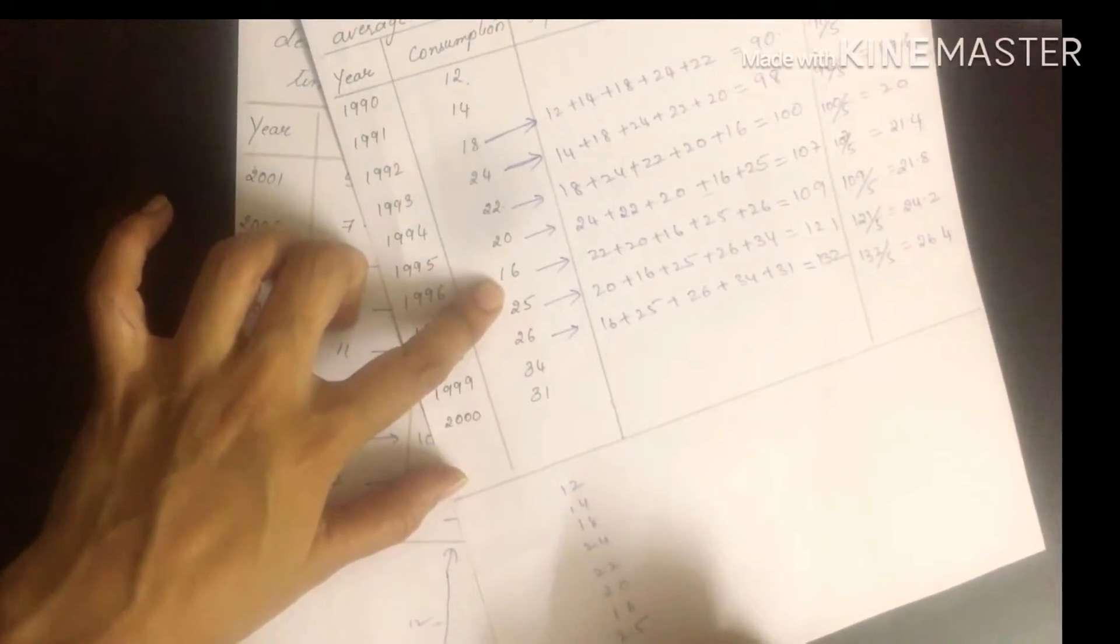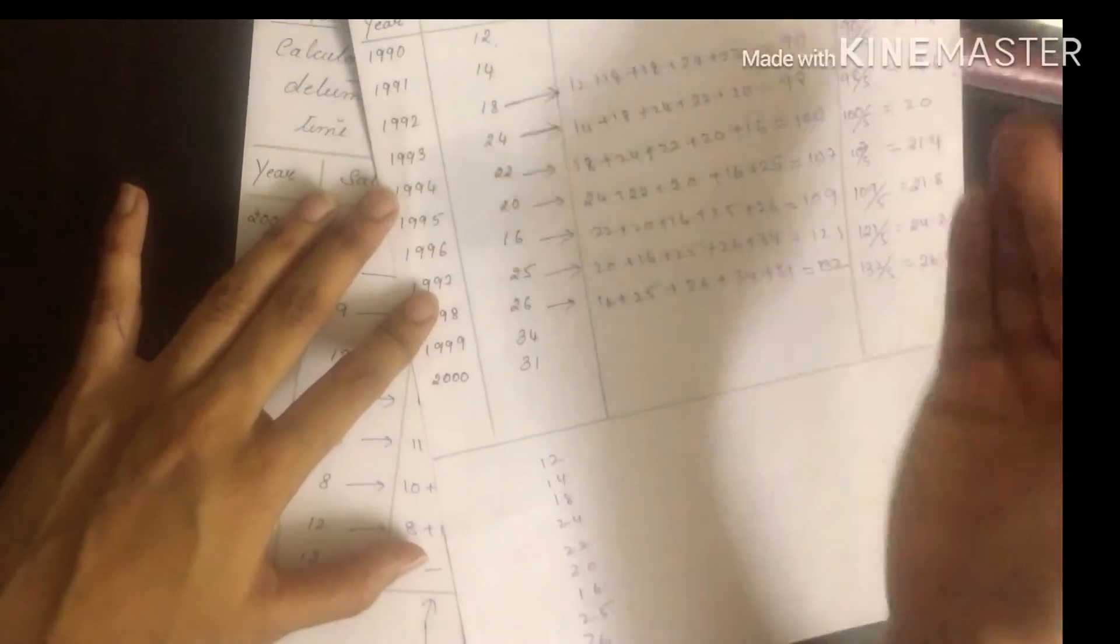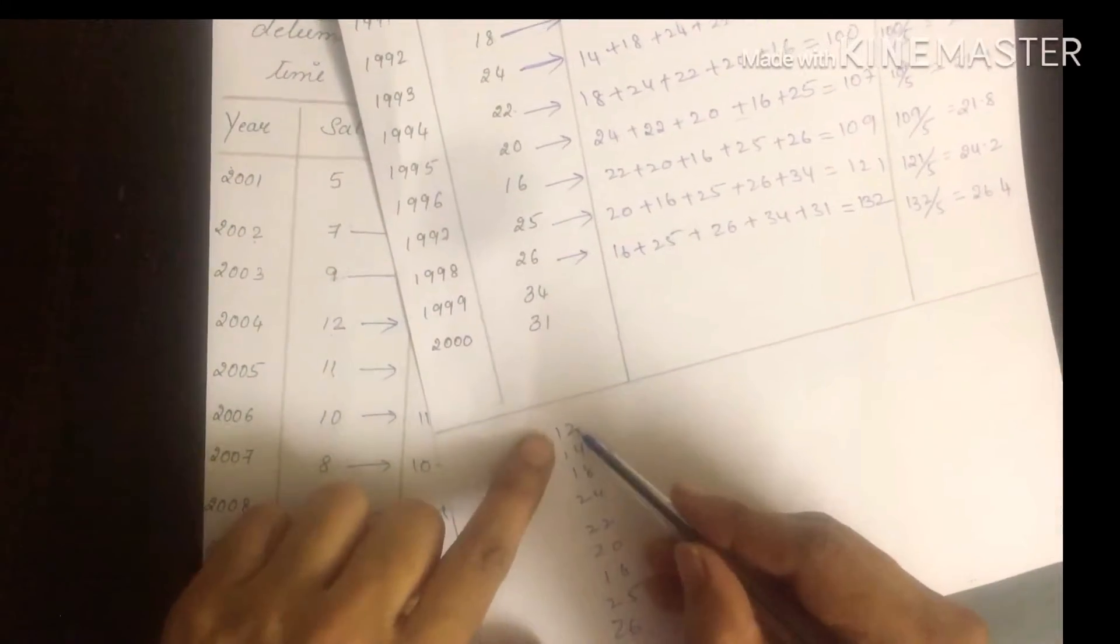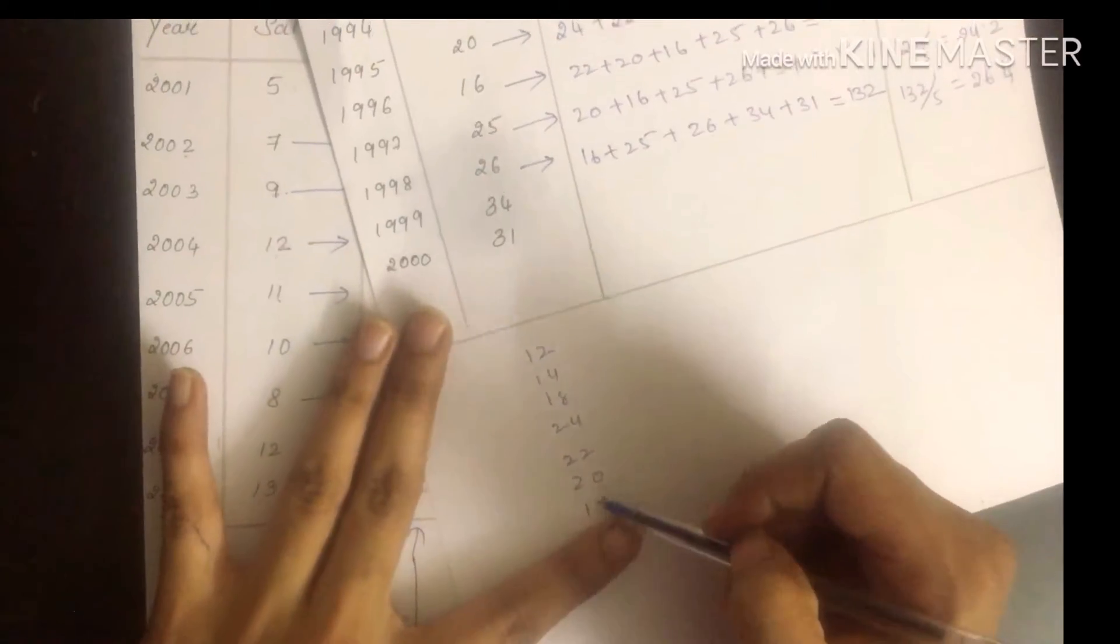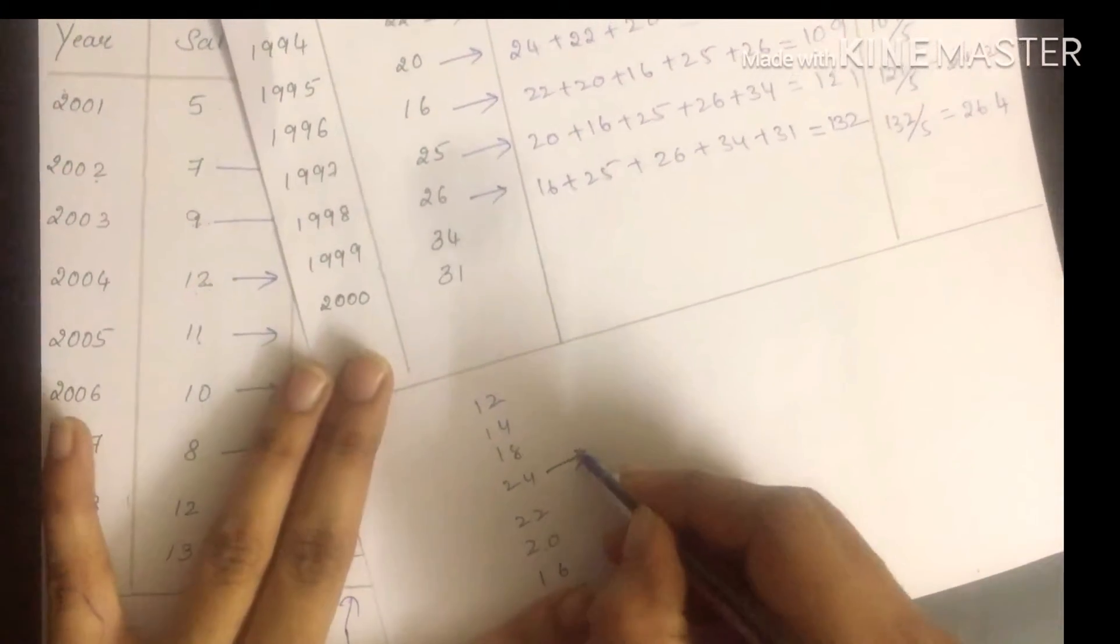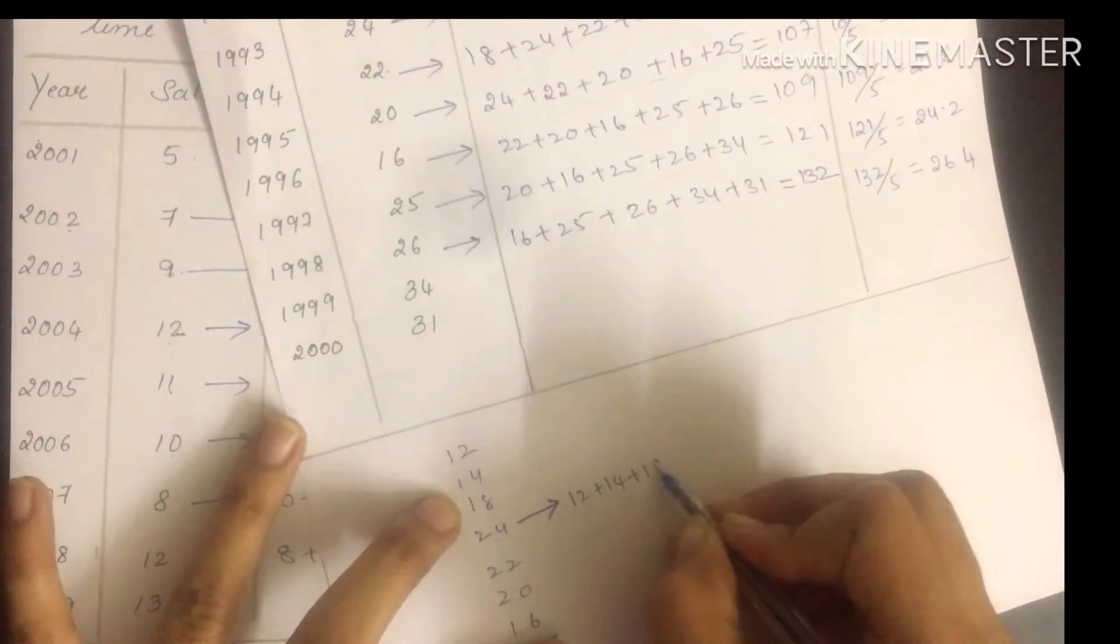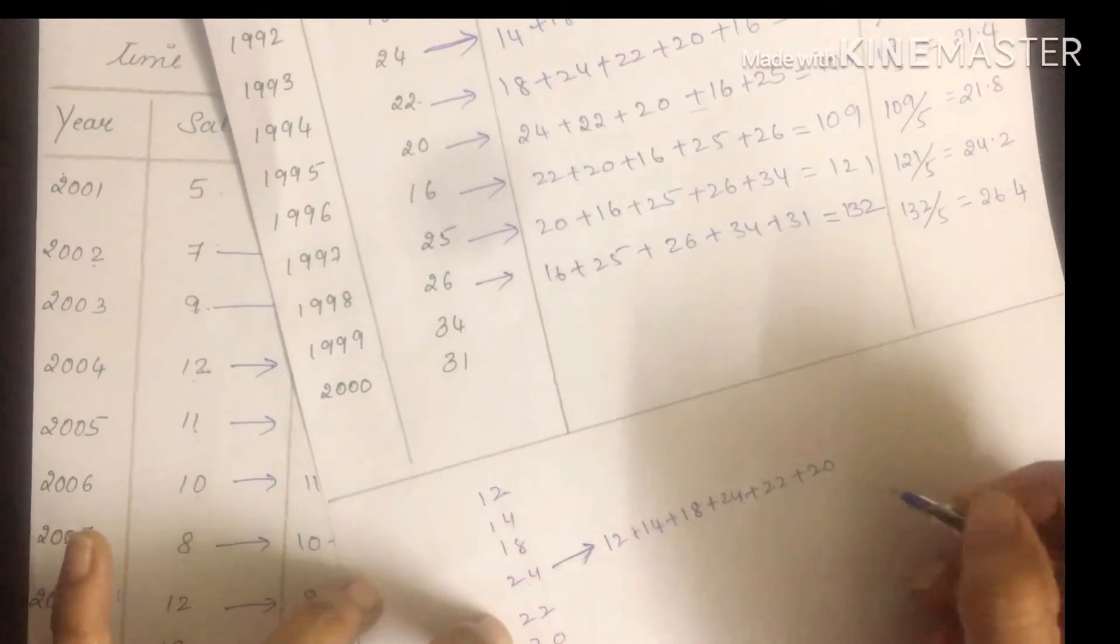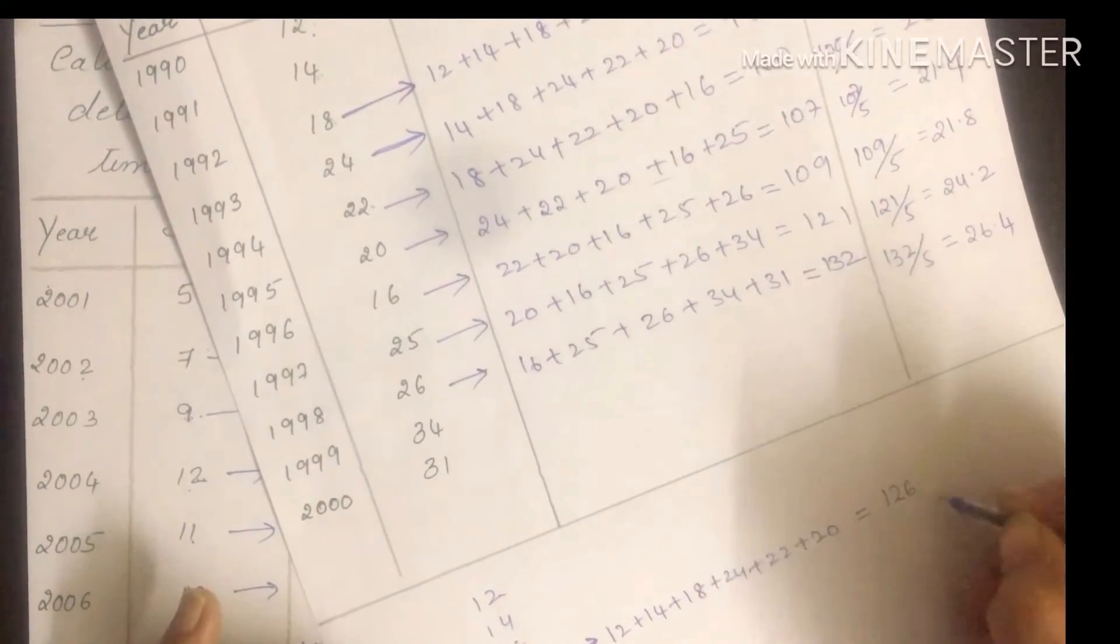If they ask you to calculate the moving average for 7 years, you need to take 7 years first: 1, 2, 3, 4, 5, 6, 7. This is what you're doing. You have to start over. 12 plus 14 plus 18 plus 24 plus 22 plus 20 plus 16 equals 126.